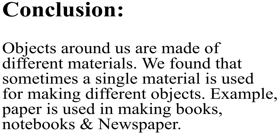Conclusion: Objects around us are made of different materials. We found that sometimes a single material is used for making different objects. For example, paper is used in making books, notebooks, newspapers, etc.